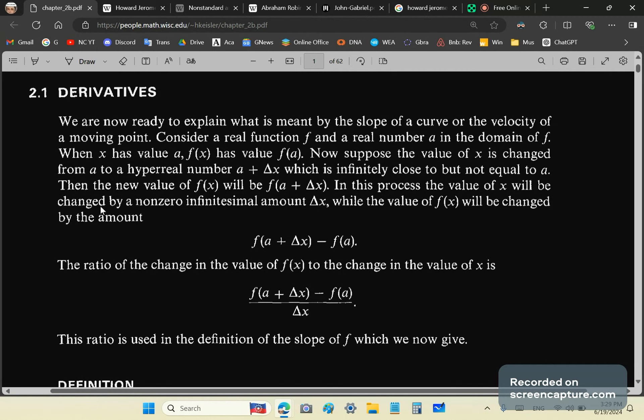Okay, so total confusion. And we haven't even seen, what is it, one, two, three sentences and nothing makes sense so far. Then the new value of f(x) will be f(a + Δx). And it says in this process, the value of x will be changed by a non-zero infinitesimal amount delta x. Well, I would have thought that the purpose of an infinitesimal is that it's non-zero anyway. So why he mentions that makes no sense because if it was zero, then we'd have a problem.